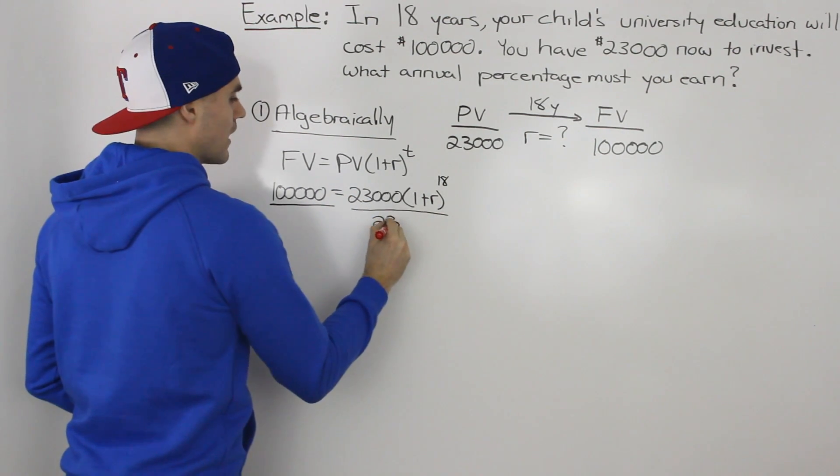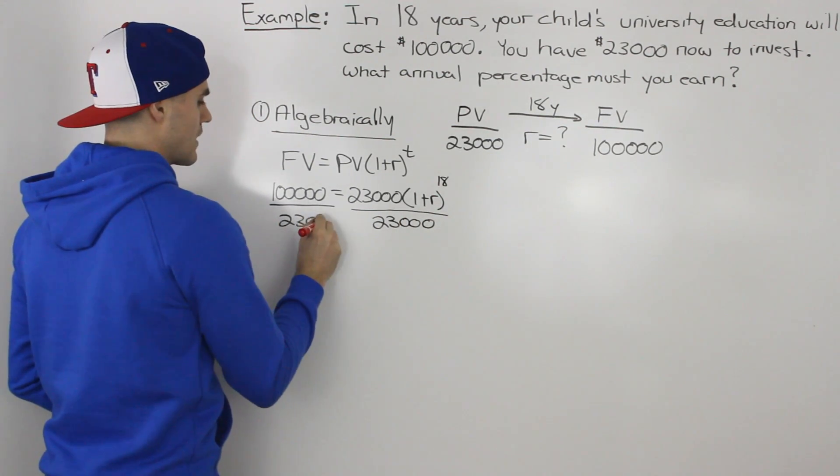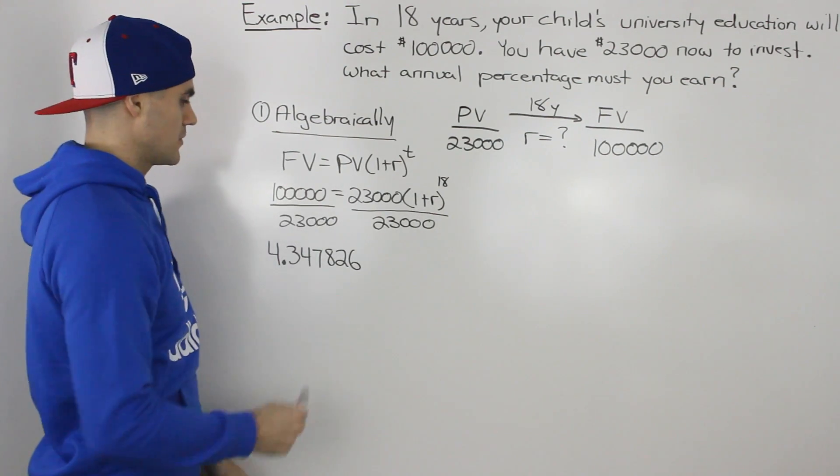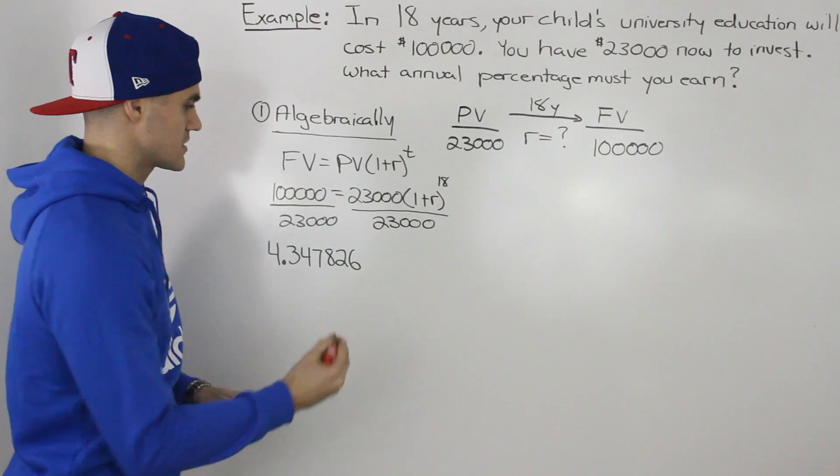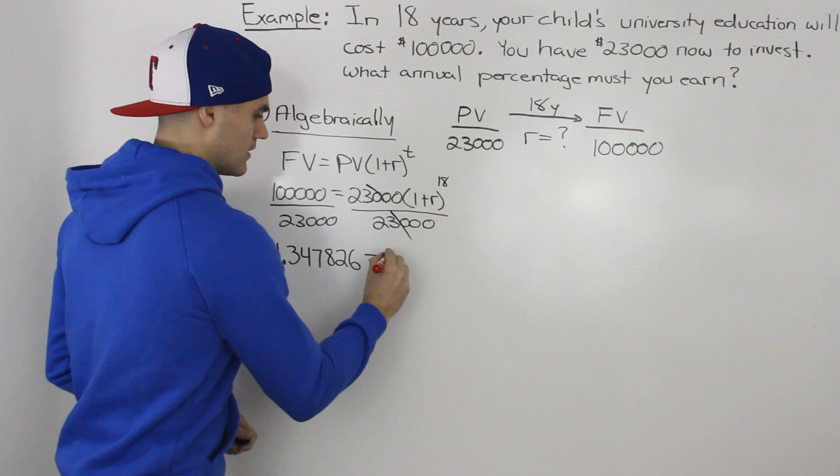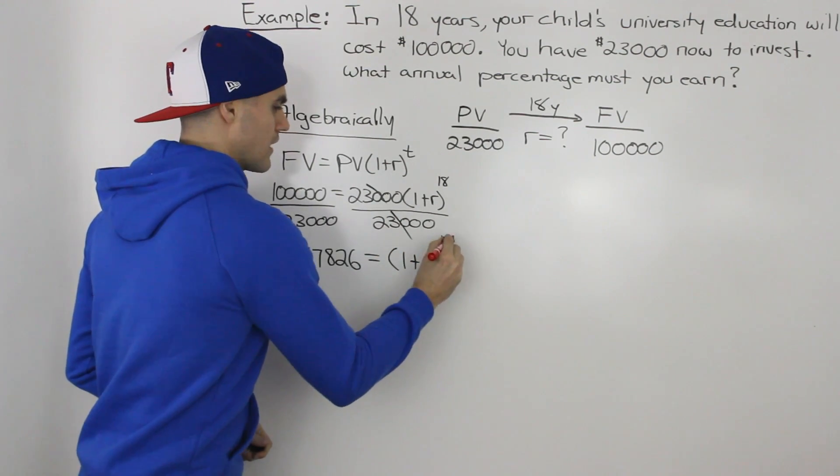So we would divide both sides by $23,000. Dealing with the left side first, $100,000 divided by $23,000 gives us 4.347826. On the right side, the $23,000 cancel out, and we're just left with 1 plus R to the power of 18.